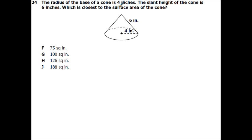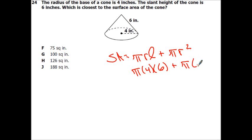Alright, the radius of the base of a cone is four inches. The slant height of the cone is six inches, which is closest to the surface area of the cone. So remember, surface area equals pi times radius times slant height plus pi r squared. So let's go ahead and plug in what we know. So pi times four times six plus pi times four squared. So let's simplify some of this. So it's going to end up being 24 pi plus 16 pi. And then we can just combine like terms here. So we're going to end up getting 40 pi.